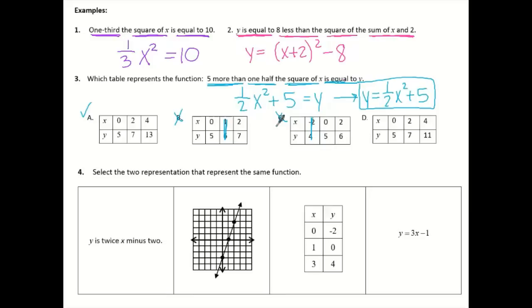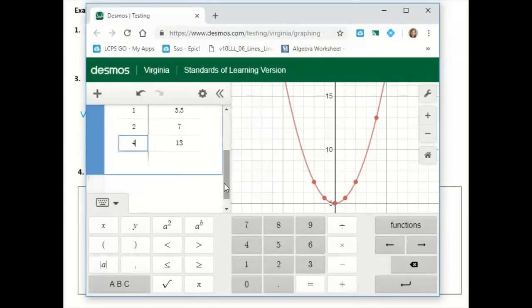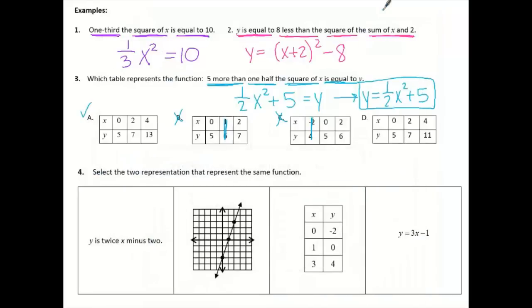And lastly, I have 0, 5, which worked, 2, 7. But notice here it has 4, 11. And for ours, we already found out 4 would go with 13. So yes, our answer is A.